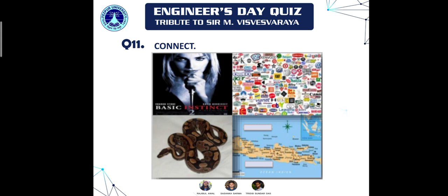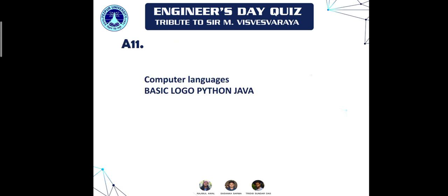Question eleven: a connect question with four pictures, where the third picture was a giveaway hint and the fourth was a map of a particular place. The connection is computer programming languages — BASIC, Logo, Python, and Java. The map shown was of Java, and the second slide featured many logos of these languages.